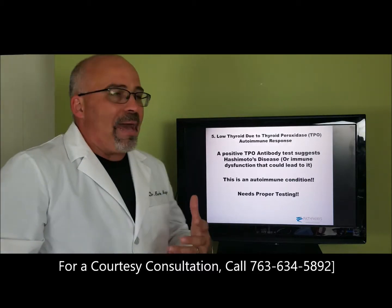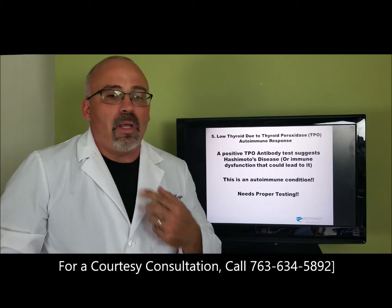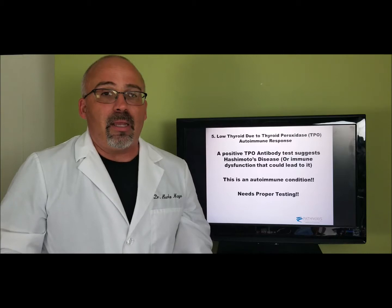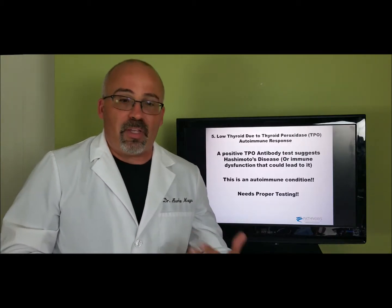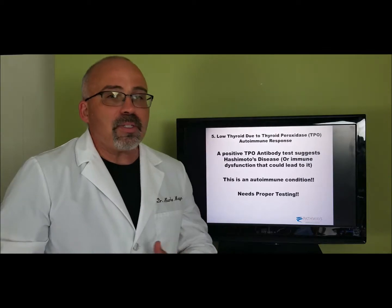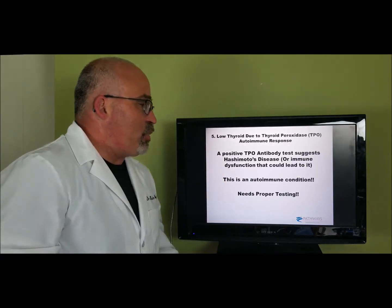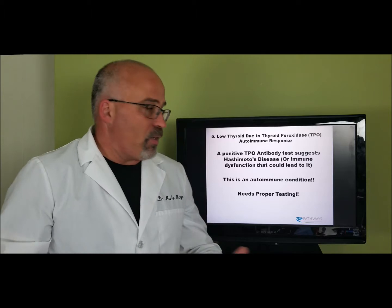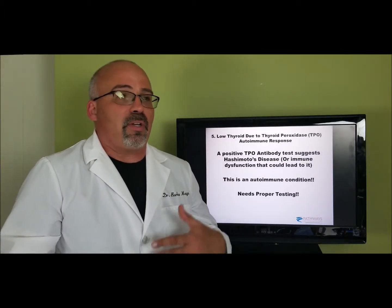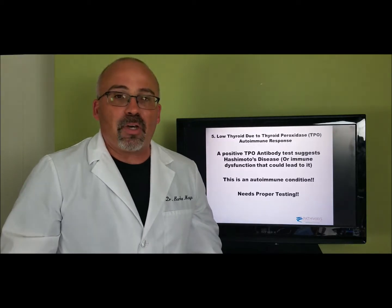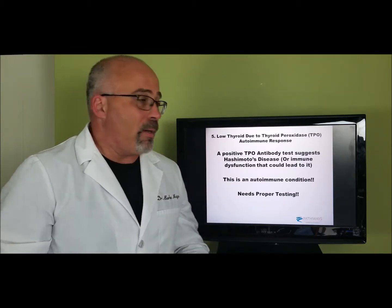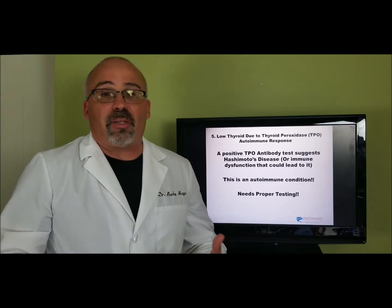In our system we have two enzymes — one's called TPO and one's called TBG, which is a transport molecule covered in a different video. Today we're talking about TPO, which is the enzyme in the thyroid gland responsible for the formation of your thyroid hormone, your T3 and T4. When your immune system starts to attack it, a positive TPO antibody suggests Hashimoto's disease. A Japanese surgeon named Hashimoto observed a collection of symptoms, combined certain lab findings, and called it Hashimoto's autoimmune thyroiditis — where the immune system attacks the TPO enzyme. When you have antibodies, it suggests the condition is present.